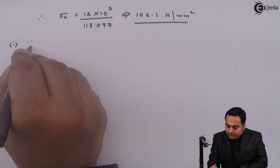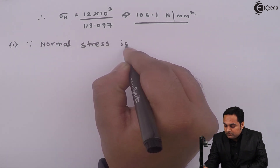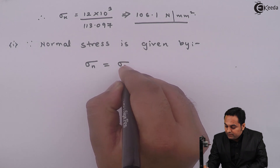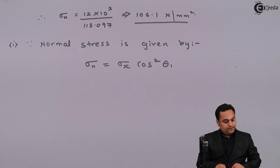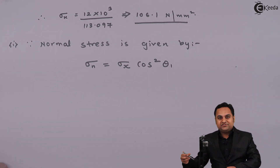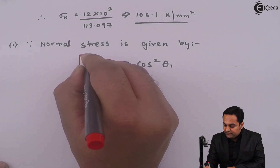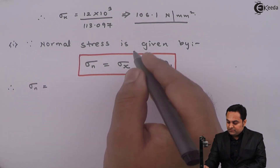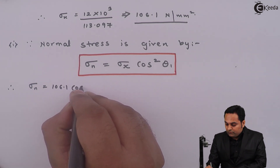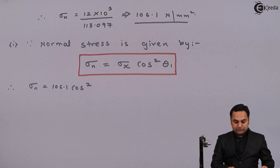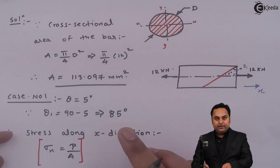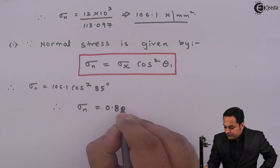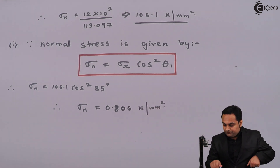Normal stress is given by the formula: σn = σx × cos²θ₁. We have σx = 106.1 and θ₁ = 85 degree. Therefore, σn = 106.1 × cos²(85°) = 0.806 N/mm². This is the first answer.